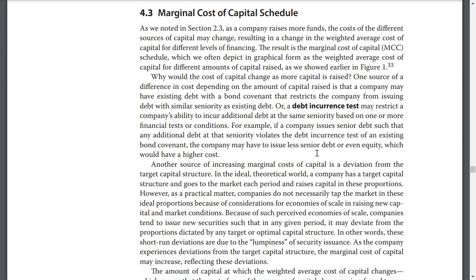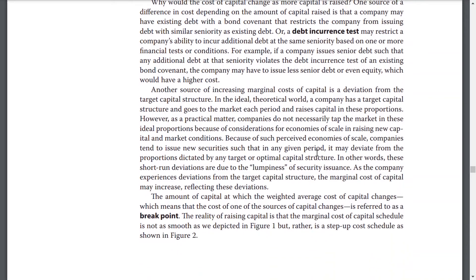Another source of increasing marginal cost of capital is a deviation from the target capital structure. In the ideal theoretical world, a company has a target capital structure and goes to the market each period and raises capital in those proportions. However, in practice, companies do not necessarily tap the markets in these ideal proportions because of considerations of economies of scale in raising new capital and market conditions. Because of such perceived economies of scale, companies tend to issue securities such that at any given period they may deviate from the proportions dictated by their target or optimal capital structure. These short-run deviations are due to the lumpiness of security issuance.